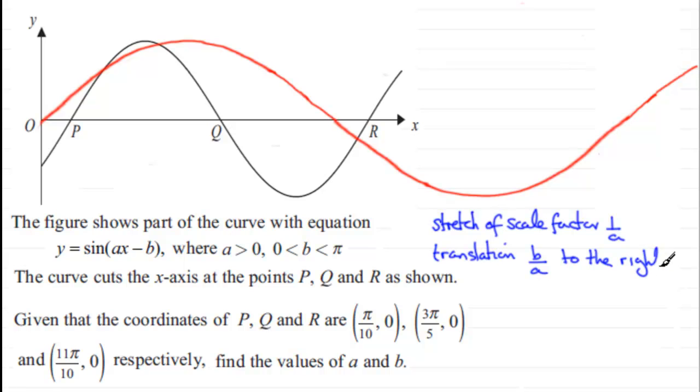If we had a question where it was the sine of ax plus b, it would be a stretch of scale factor 1 over a, followed by a translation of b over a units to the left. And the same would apply if it was a cosine function or a tan function. We would take those base graphs of sine x, cos x, tan x respectively.